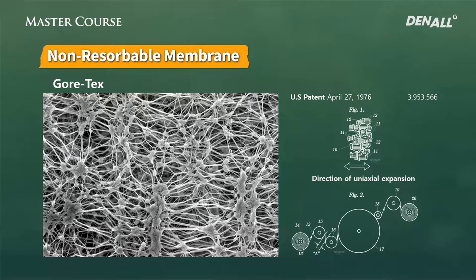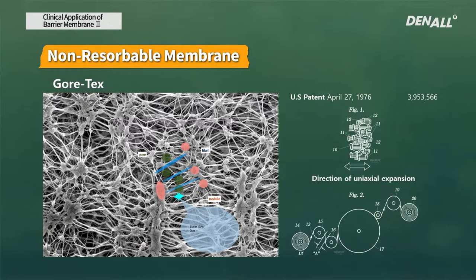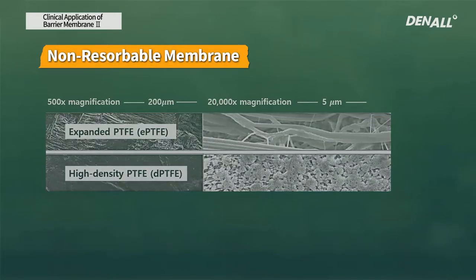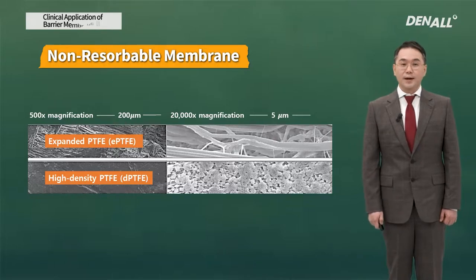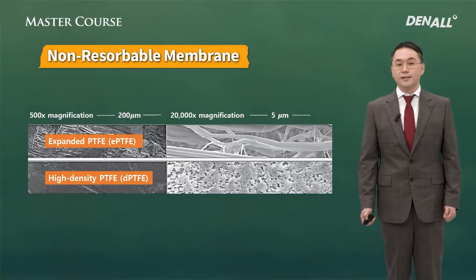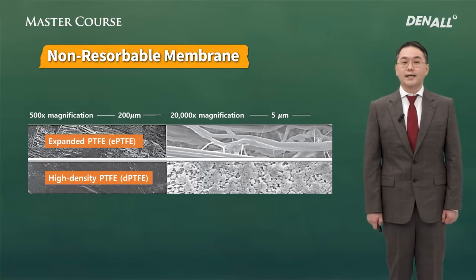First, Gore-Tex — the expanded PTFE membrane. The membrane is expanded suddenly, about 800%. Because of that, fibrils are expanded, and between them pores are created in the size of about 5 microns. It is known by the brand name Gore-Tex. So the PTFE membrane uses the same material, but how it is treated — whether it is expanded or not — determines the pore size.